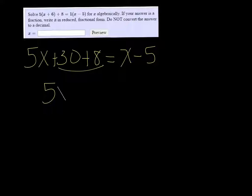Combining like terms, we have 5x + 38 = x - 5.